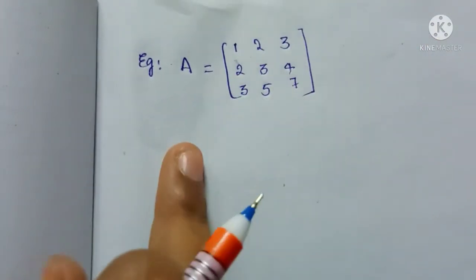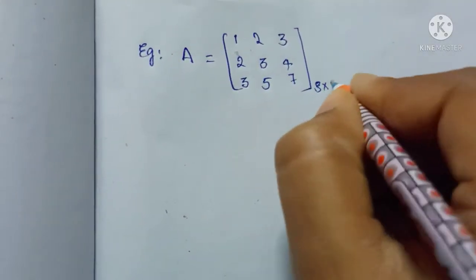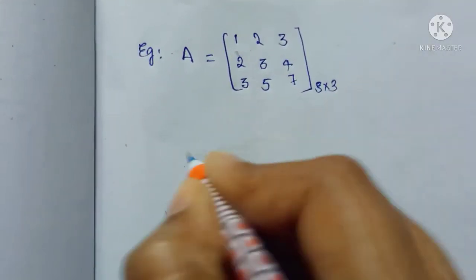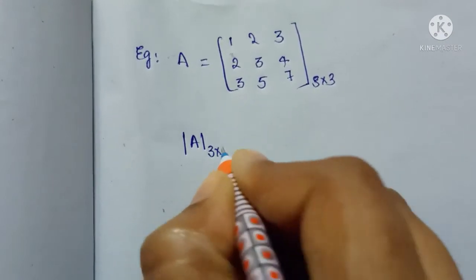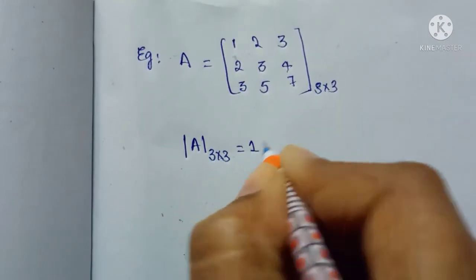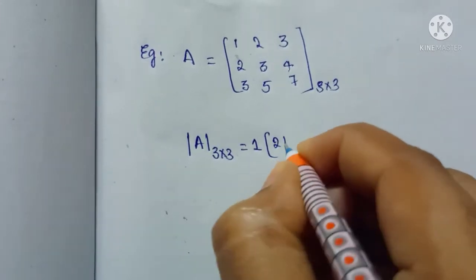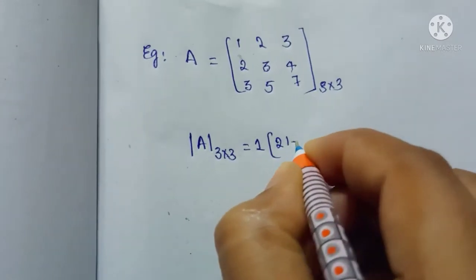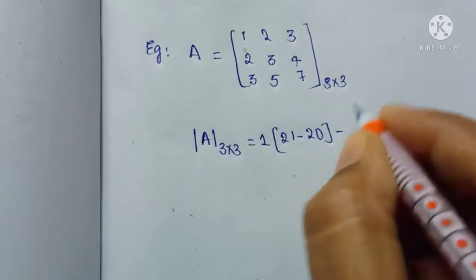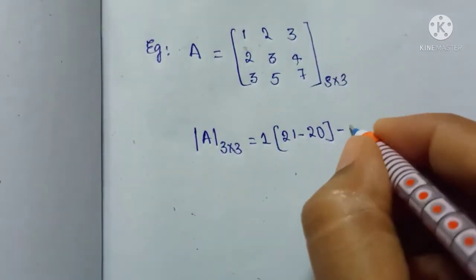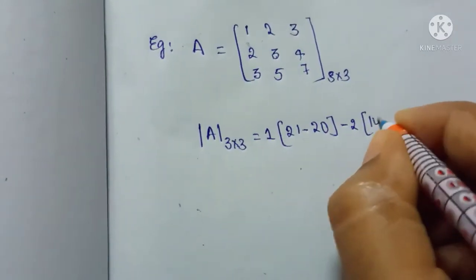This is a 3×3 matrix, so we will find the determinant of the 3×3 matrix. We compute: 1 into (3×7 = 21 minus 4×5 = 20), minus 2 into (2×7 = 14 minus 3×4 = 12), plus 3 into...